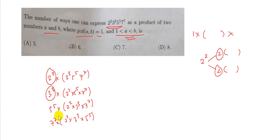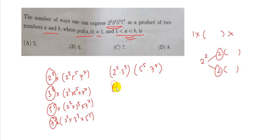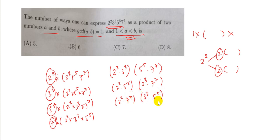The other set of choices comes from grouping them in pairs of two: 2²·3³ paired with 5⁵·7⁷, then 2²·5⁵ paired with 3³·7⁷, or 2²·7⁷ paired with 3³·5⁵. These are the only seven possibilities that exist — there is no other combination possible. So the answer is 7.